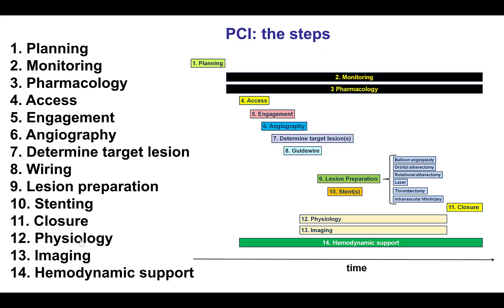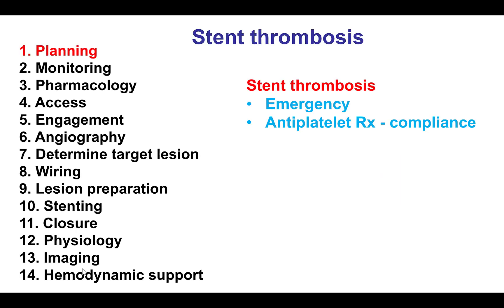We will discuss how each of the 14 steps of percutaneous coronary intervention applies to patients with coronary stent thrombosis. First, planning can be challenging since these patients often come emergently with acute myocardial infarction, often with ST segment elevation. However, it is important to ask them about their compliance with antiplatelet therapy.